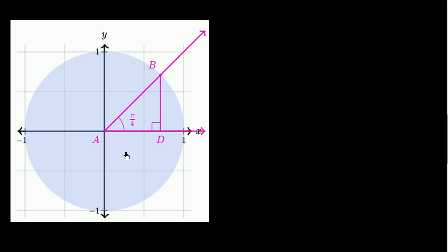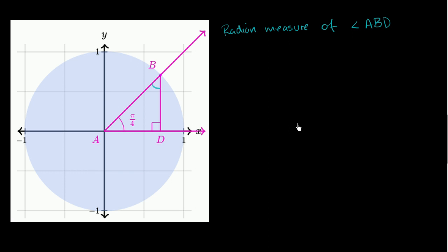What I want to do in this video is use our knowledge of trigonometry and triangles in order to figure out several things. The first thing we want to figure out is the radian measure of angle ABD. We know two of the angles of this triangle, so if you know two angles, you should be able to figure out the third.